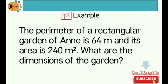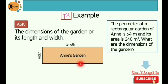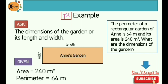First example: the perimeter of a rectangular garden of Anne is 64 meters and its area is 240 square meters. What are the dimensions of the garden? On this problem, what we're looking for are the dimensions of the garden of Anne — specifically its length and its width. The given values are: its area, which is 240 square meters, and its perimeter, which is 64 meters.